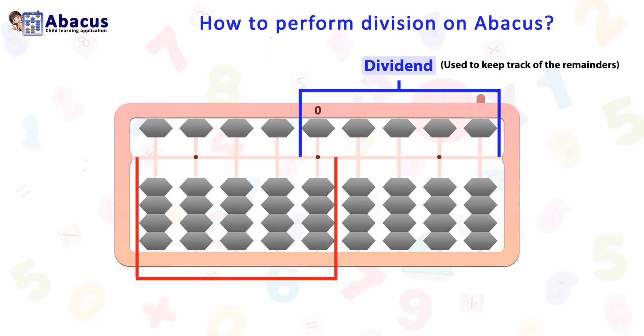The left rods from the unit rod are for the quotient, and here we get the result of the division.